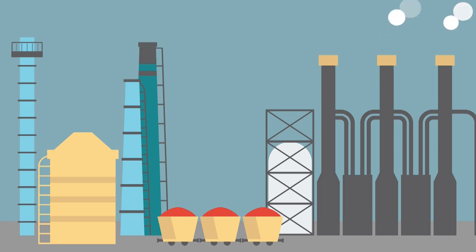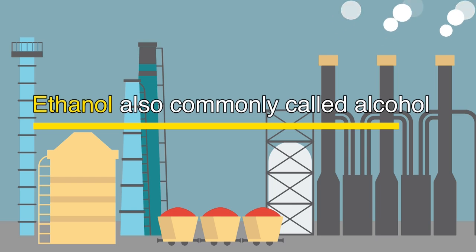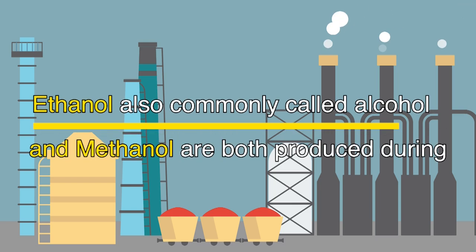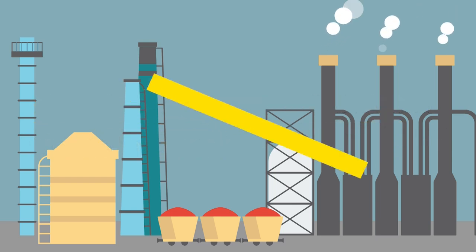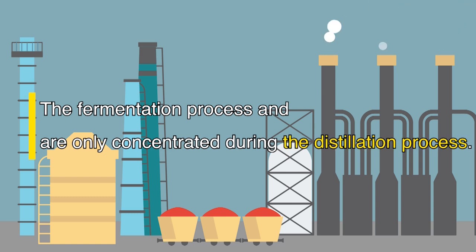The key takeaway is that methanol is formed during fermentation and comes from the raw materials themselves. If fermentation is improperly handled and contaminated with bacteria, this can lead to the production of more methanol than normal. Importantly, the distillation process doesn't produce any methanol — both ethanol and methanol are produced during fermentation and are only concentrated during distillation.